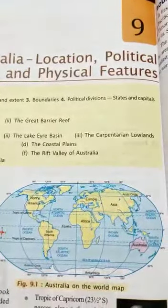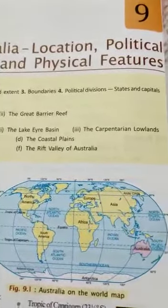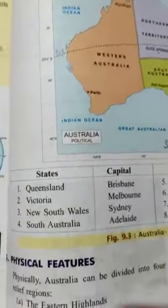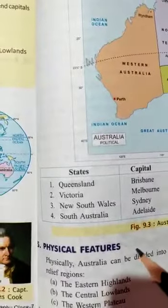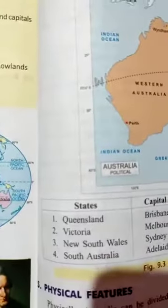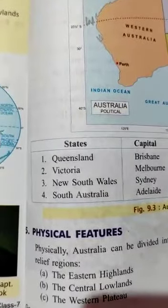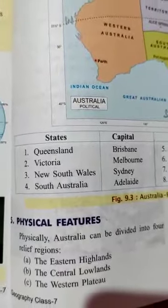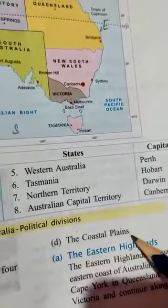Good morning children. This is a continuation of chapter 9 - Australia: Location, Political Divisions and Physical Features. In this video I am going to explain the Physical Features of Australia. Australia has a huge variety of physical features but it doesn't have high mountains, large rivers and deep valleys. The physical features of Australia can be divided into four divisions: Eastern Highlands, the Central Lowlands, the Western Plateau and the Coastal Plains.